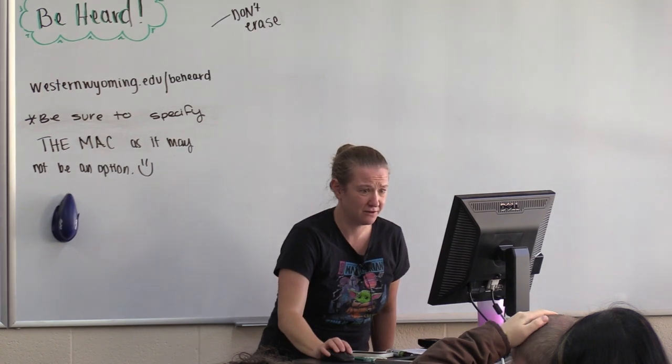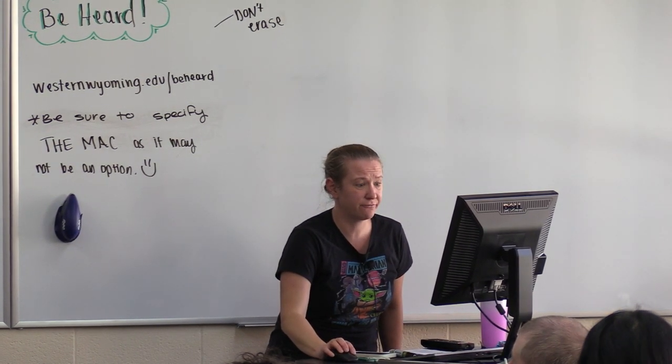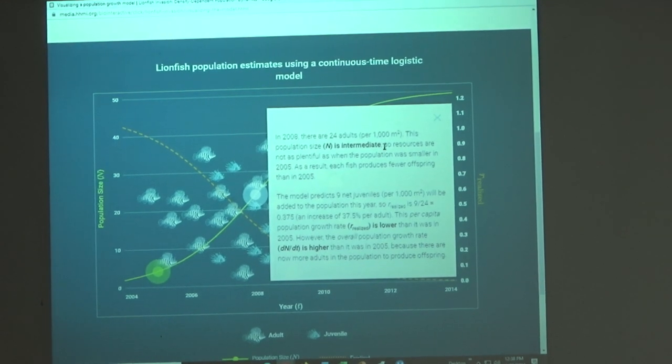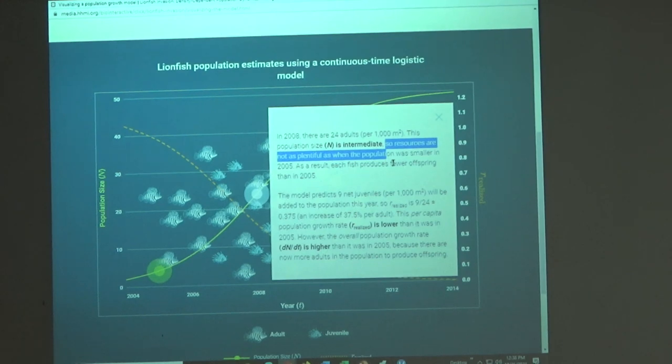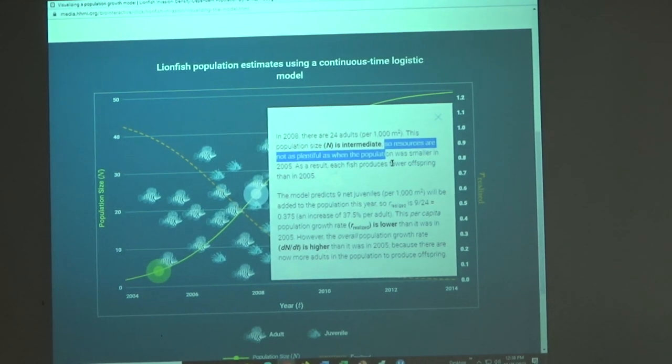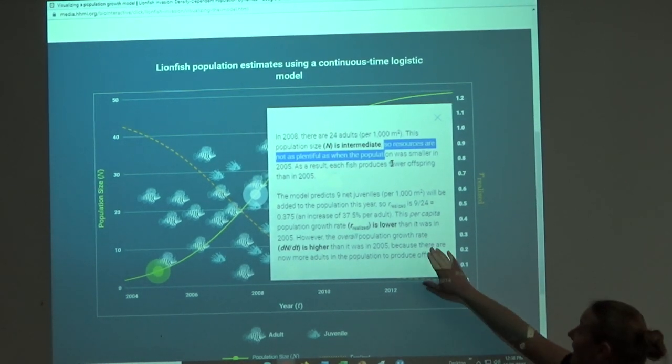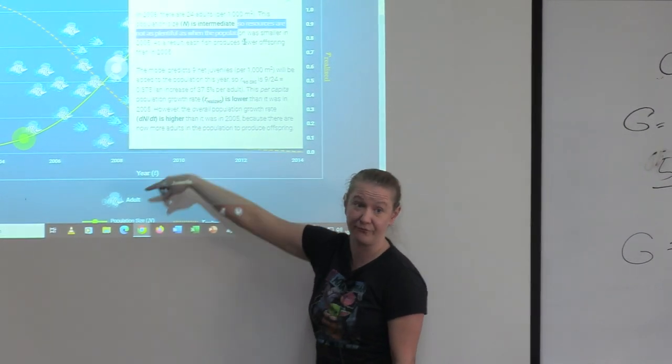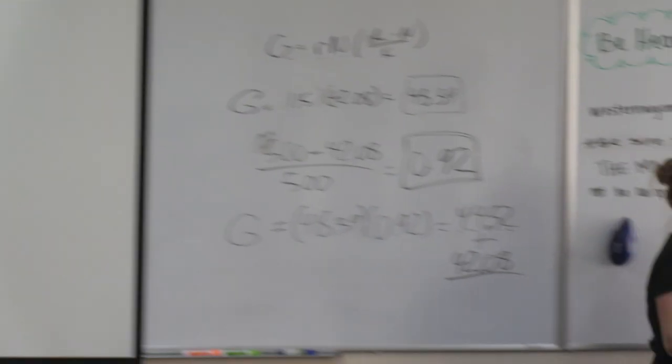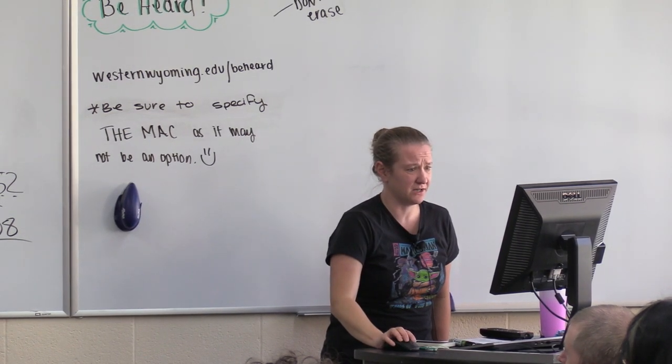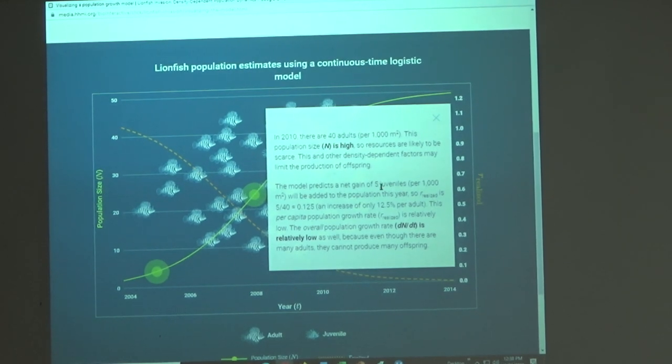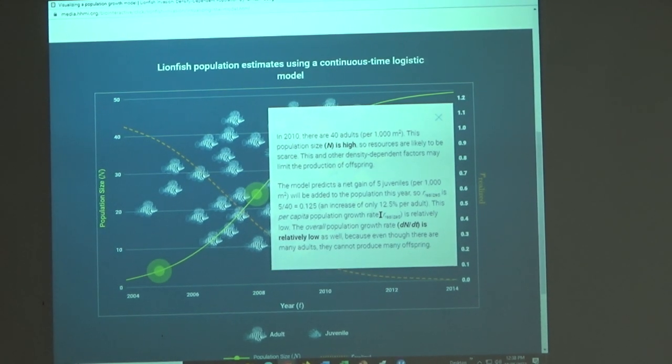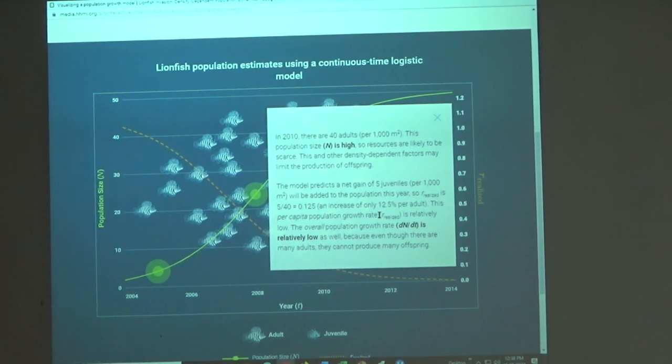But then we see here in 2008, there were 24 adults, and the model only predicts nine juveniles. Resources start to be not as plentiful. If there's not as much resources or space, the reproductive capacity of those lionfish is going to decrease. So nine juveniles divided by 24 adults, that's a decrease. It's not a 100% increase per adult as we saw before, but this is 37%. And then again, as we get a bigger population, more constraints, we've got 40 adults, but a prediction of five juveniles. So that per capita growth rate, or that R realized, is decreasing over time, because of that environmental resistance.